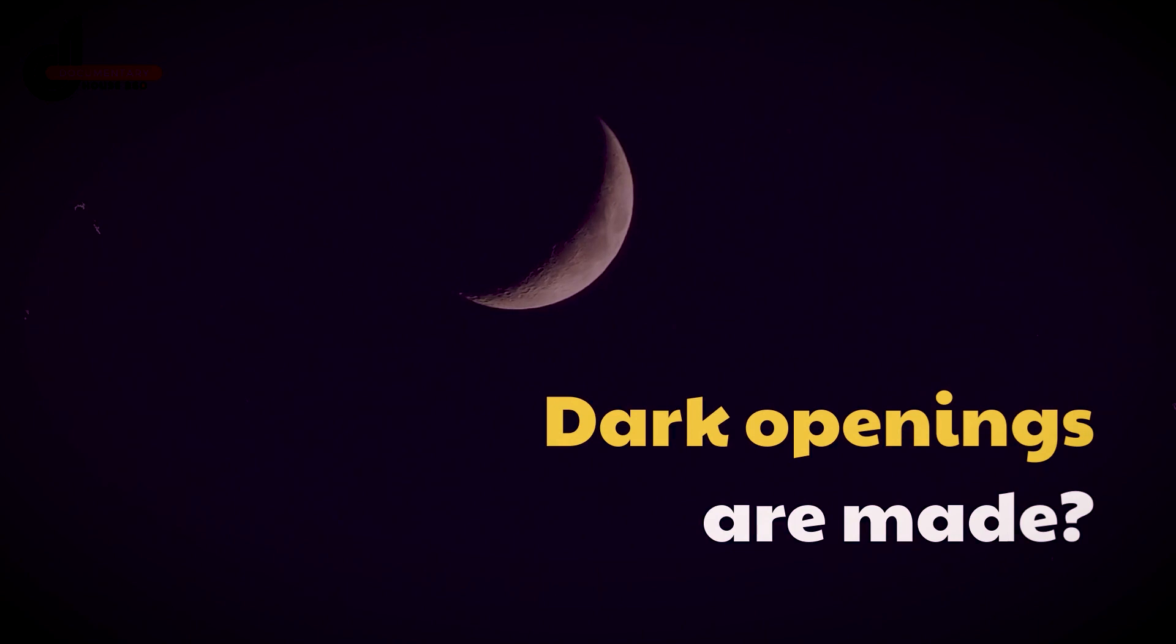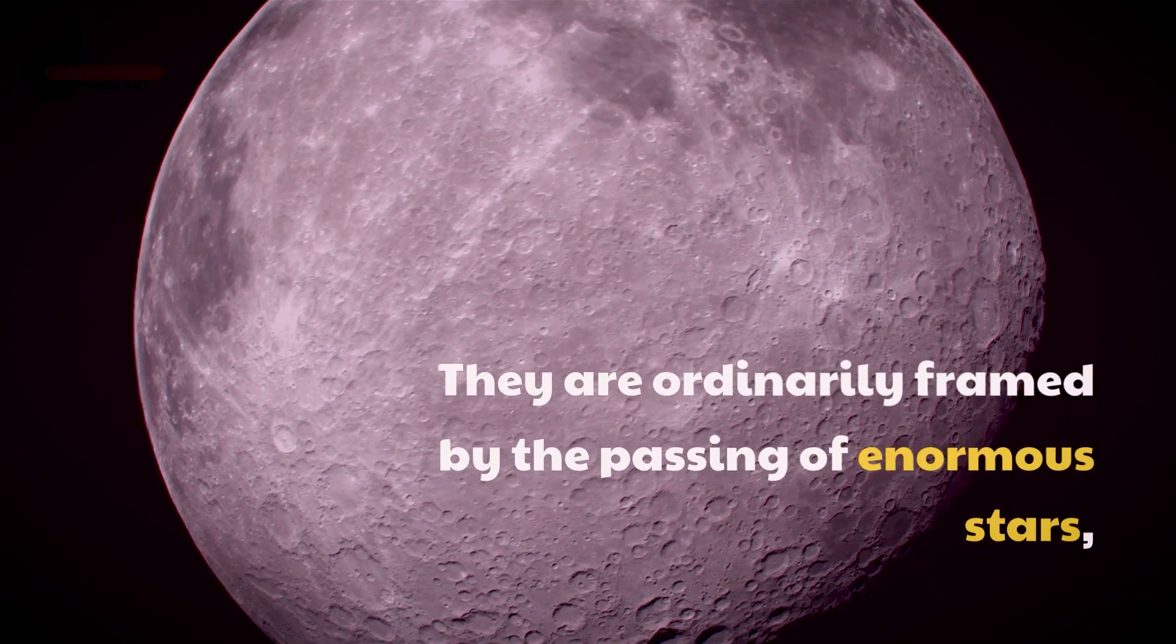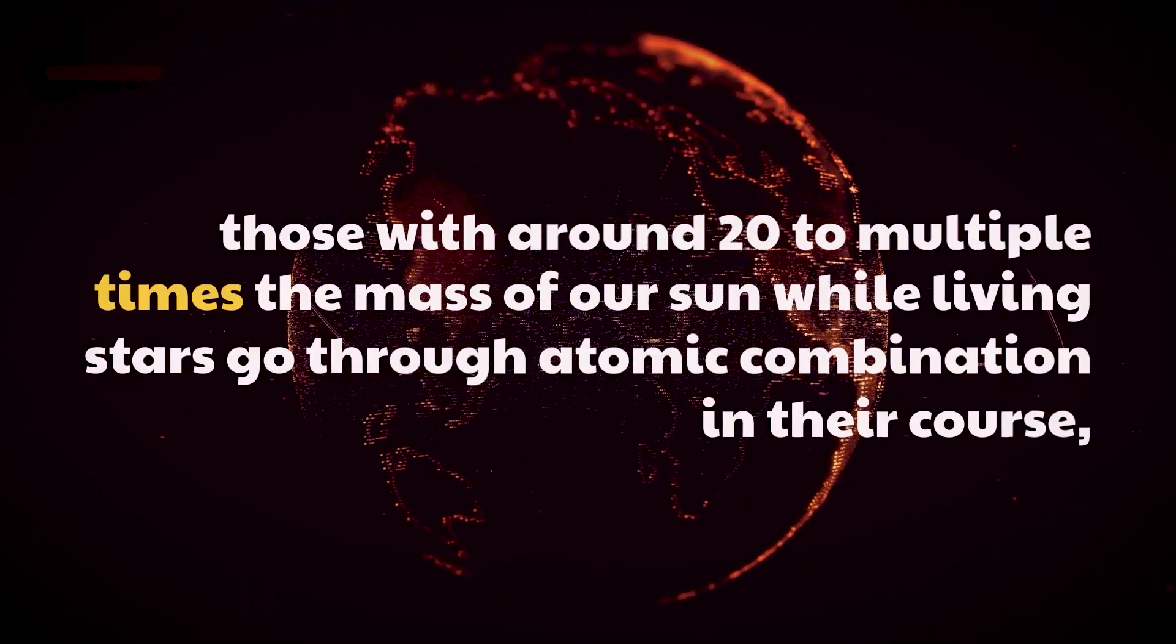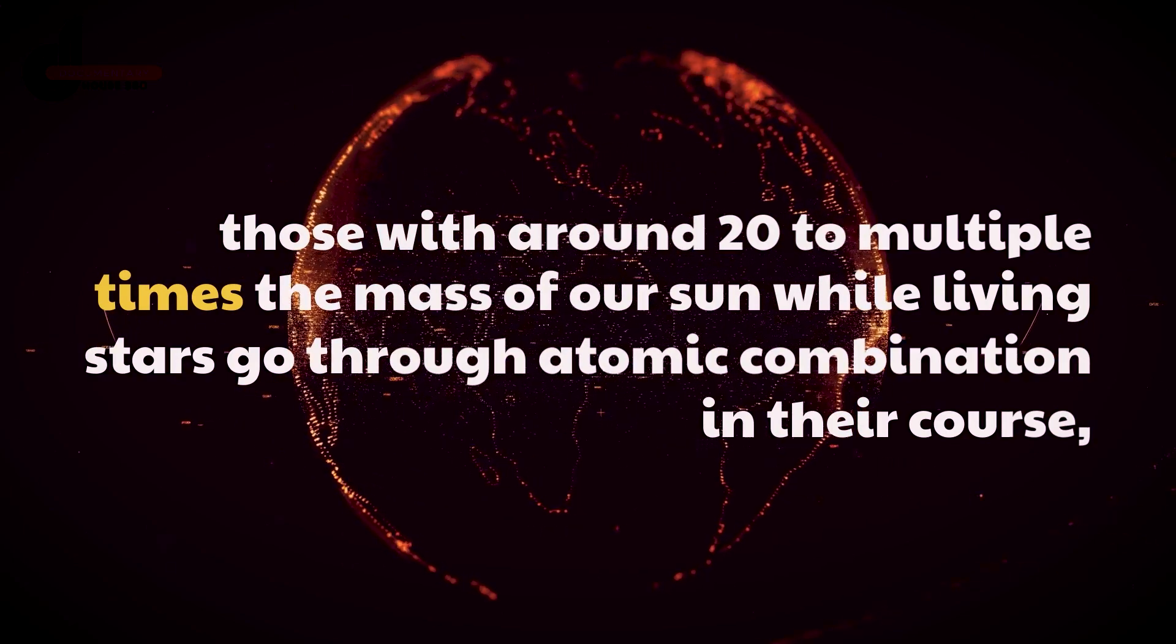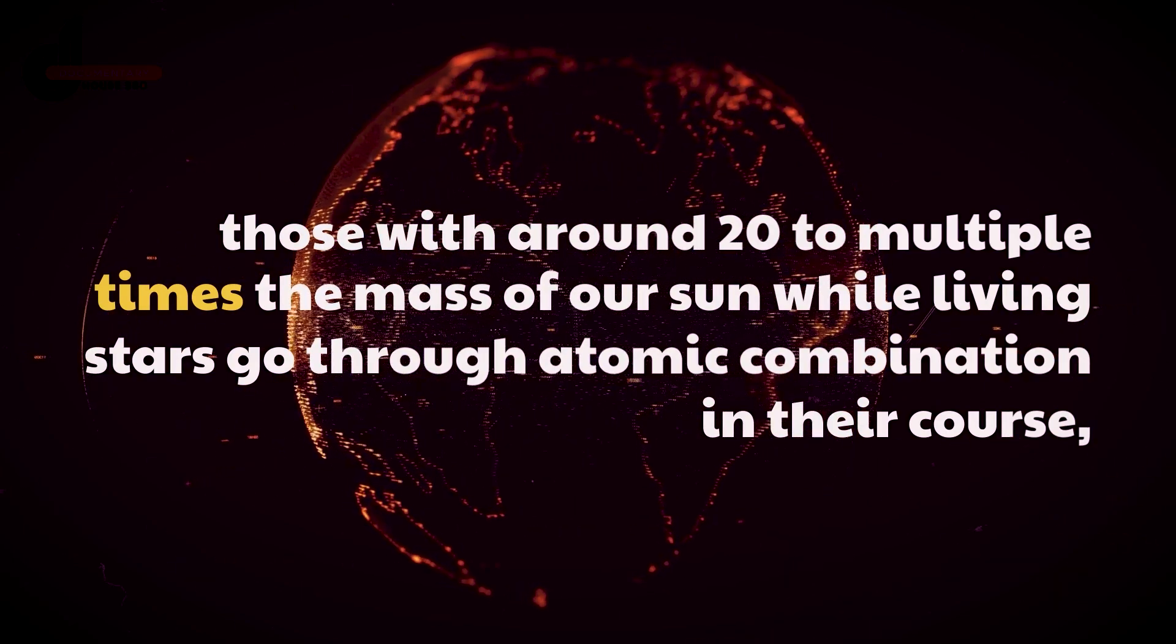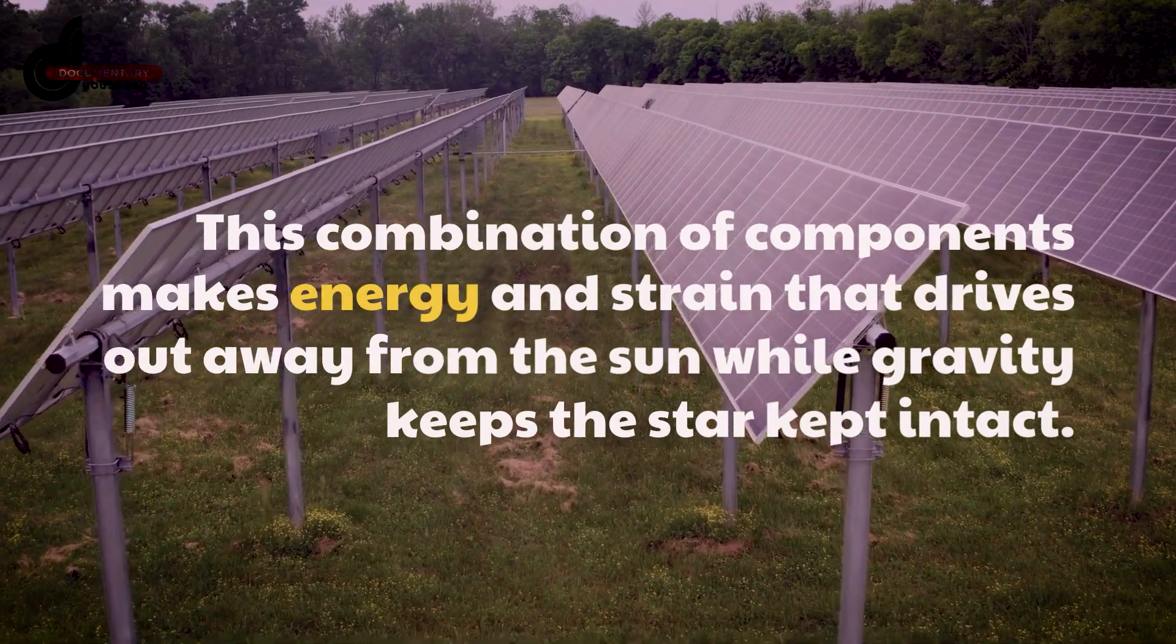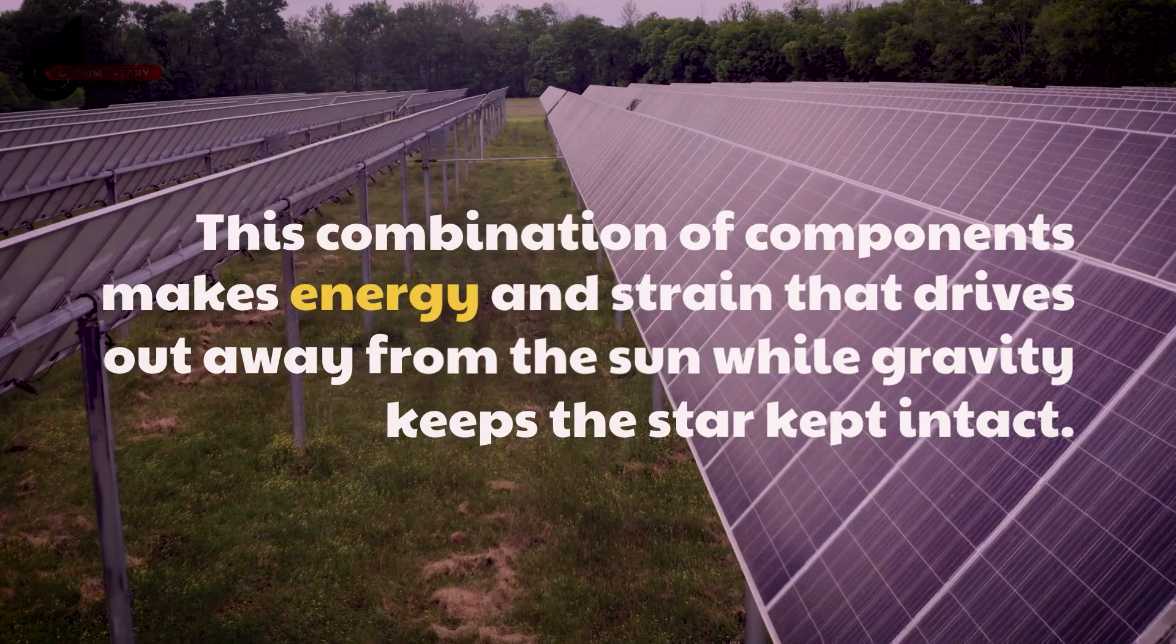Black holes are made. They are ordinarily formed by the passing of enormous stars, those with around 20 times the mass of our sun. While living, stars go through nuclear fusion in their core, fusing lighter elements like hydrogen and helium.